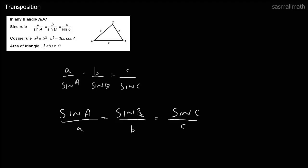When moving equations around, sometimes before you do it it's useful to just spin them upside down — you've got to do all of them in one go, mind. The reason it's useful: say you wanted to find out what sine A is. You'd have to move things around several times. But if you spin them upside down first, all you've got to do is move A up, giving you A sine B over b.